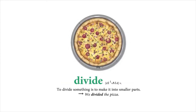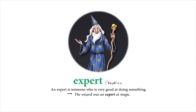Divide. To divide something is to make it into smaller parts. We divided the pizza. Expert. An expert is someone who is very good at doing something.